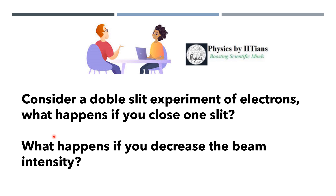The question is: consider a double slit experiment of electrons — what happens if you close one slit, and what happens if you decrease the beam intensity of the electrons? Let's see what happens.